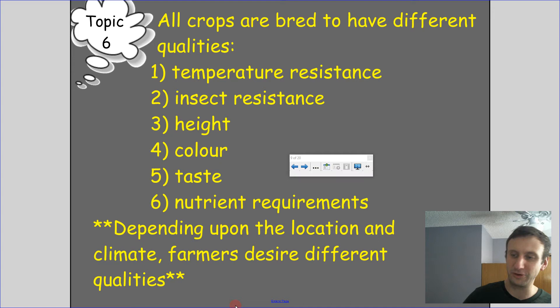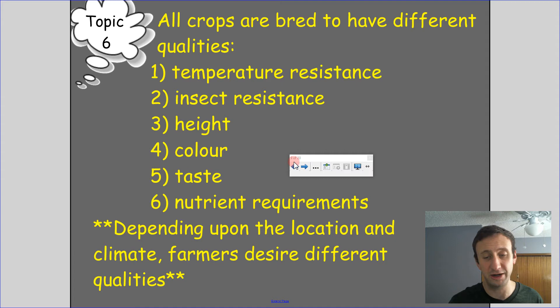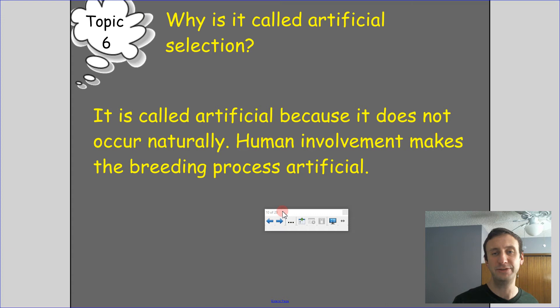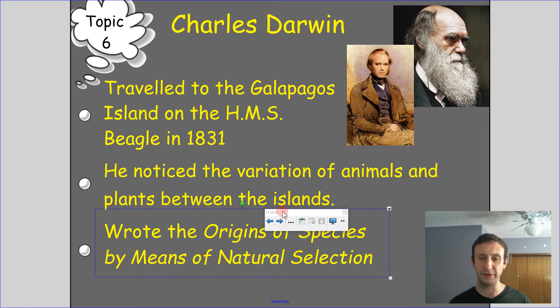Depending on location and climate, farmers desire different qualities. It is called artificial selection because it does not occur naturally — human involvement makes the breeding process artificial. Humans choose what ends up mating and carrying on its offspring.